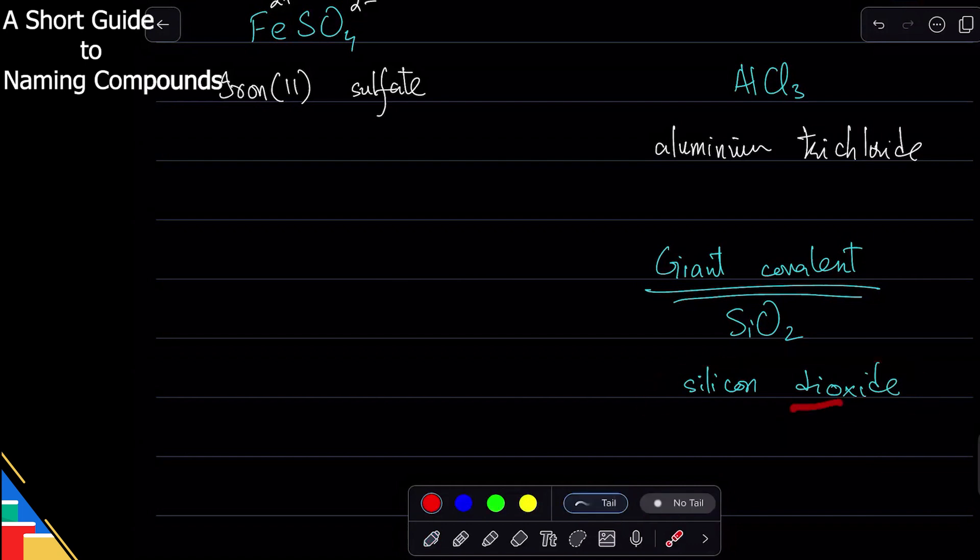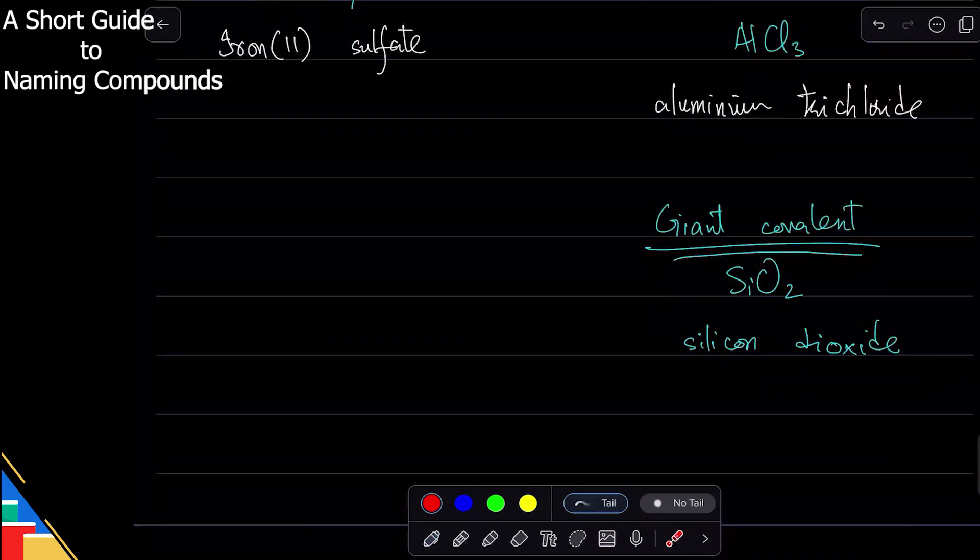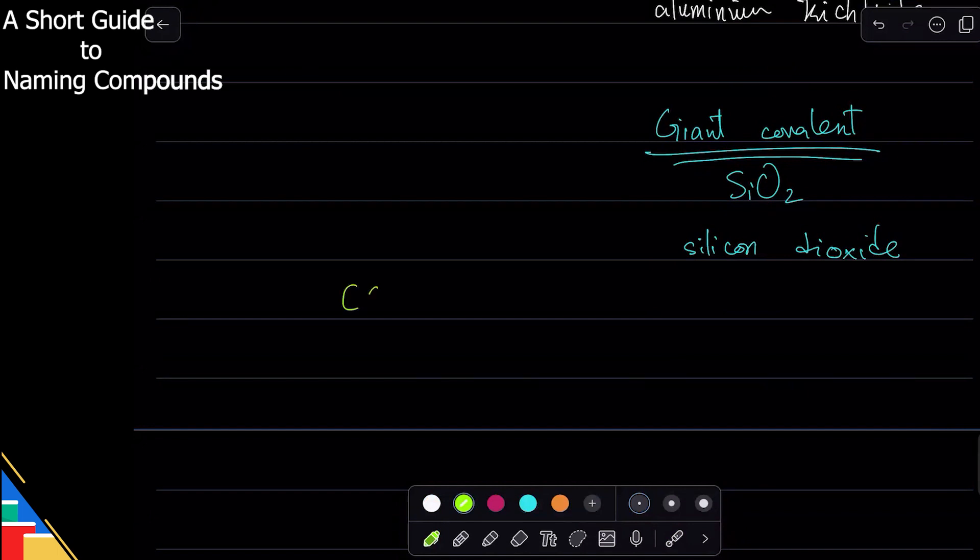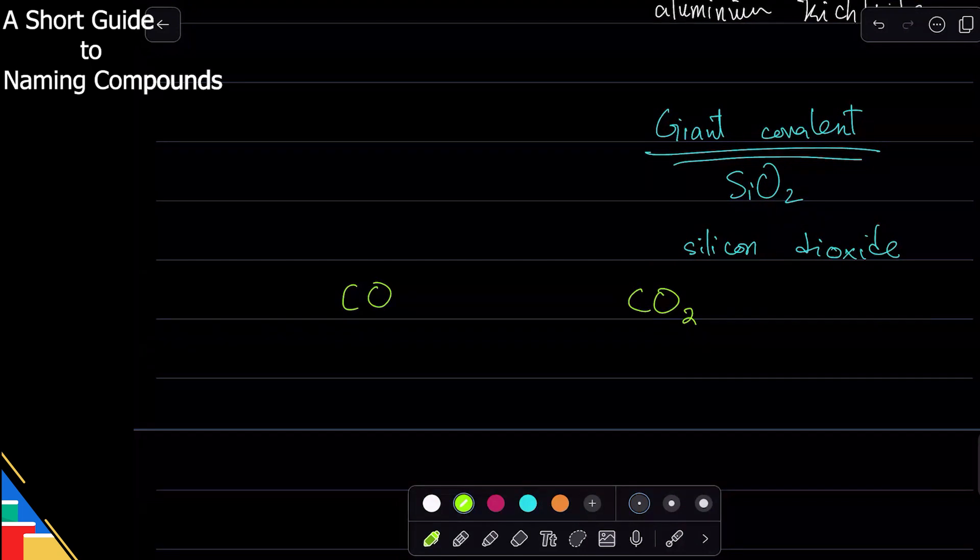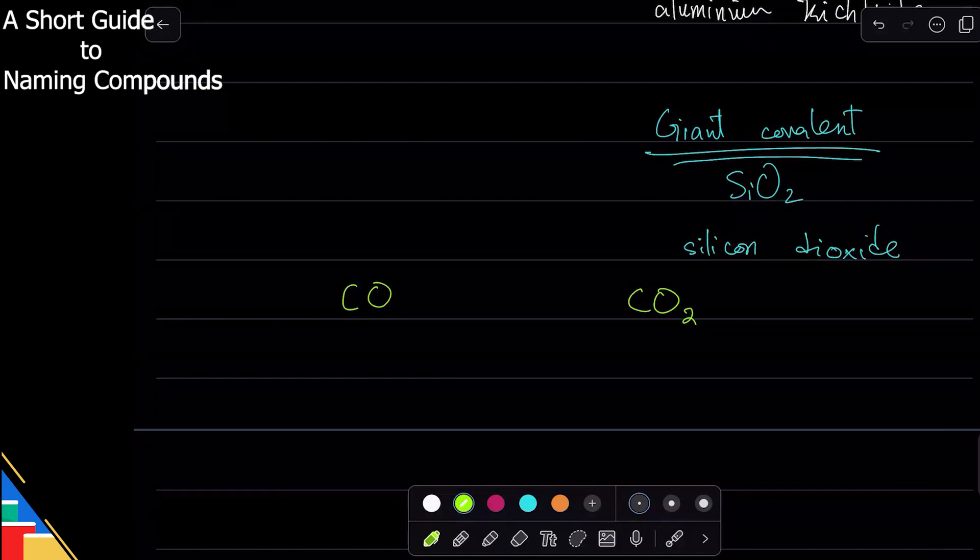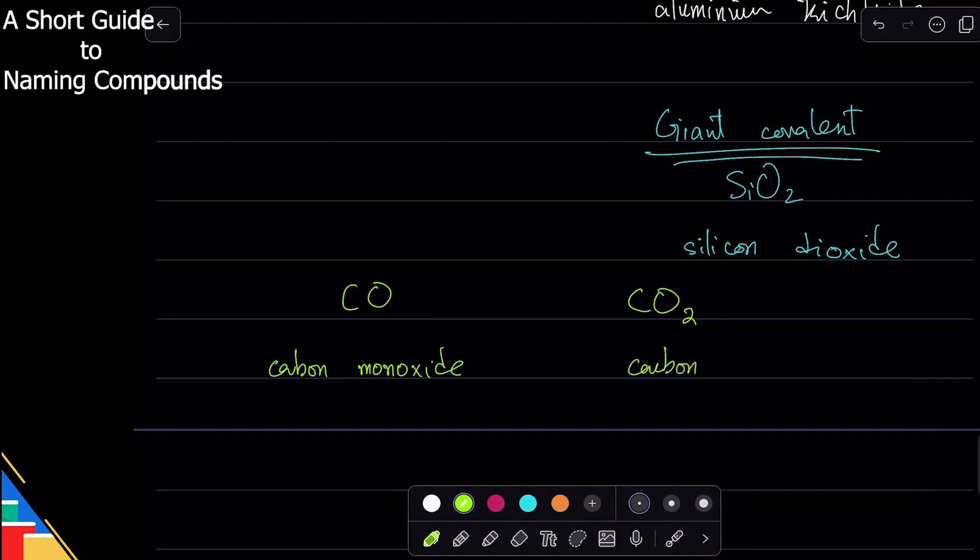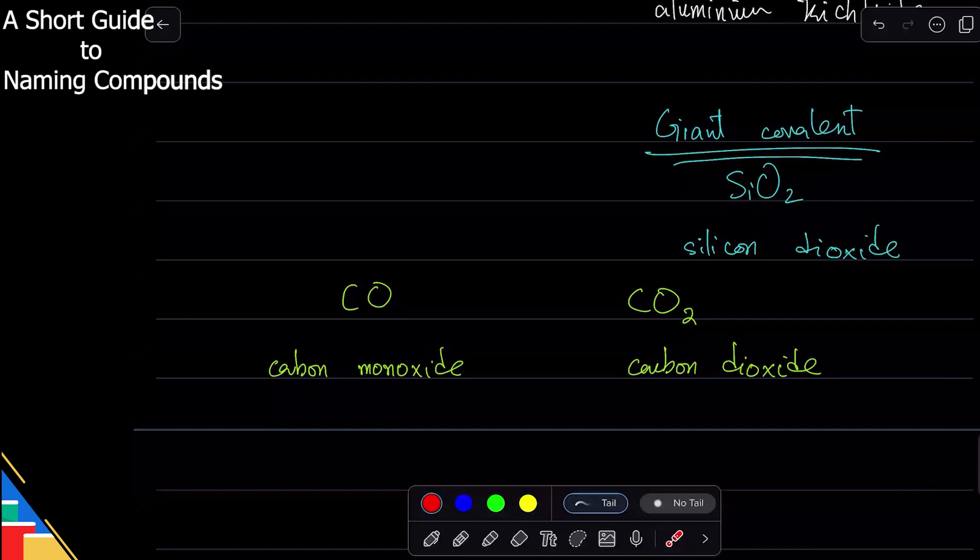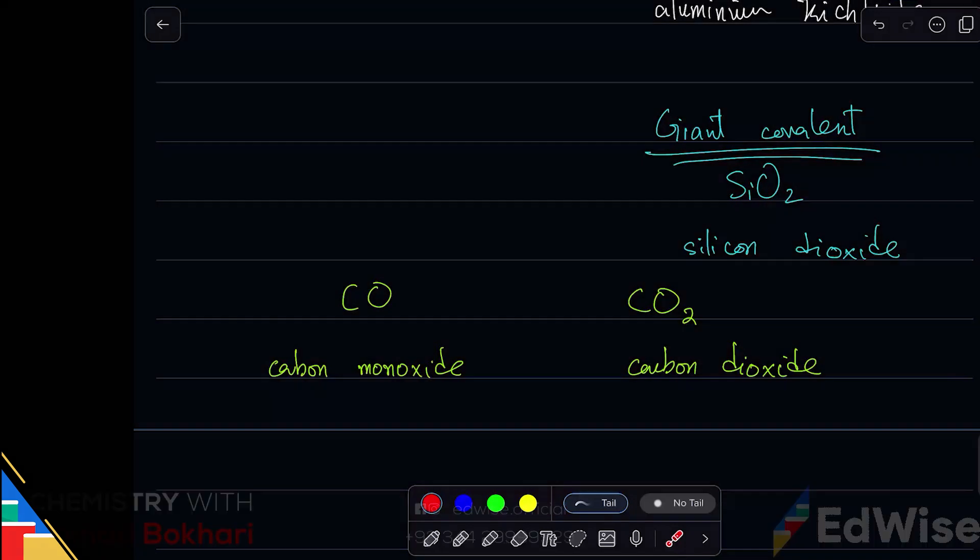When do we use mono? We use mono when there's doubt. For example, carbon reacts with oxygen. Carbon can make CO and CO2 - one of the two or both. Even though both have carbon and oxygen, it's important to tell which compound we're talking about. Are you talking about carbon with one oxygen or two oxygens? That's why we say carbon monoxide for CO and carbon dioxide for CO2. Only in such cases where you have doubts, you put mono. Otherwise, you can just leave it and avoid writing mono.